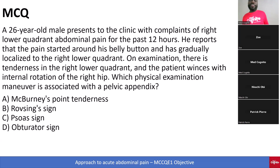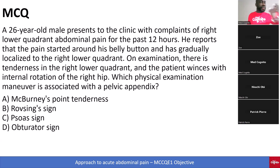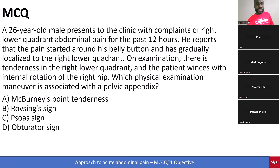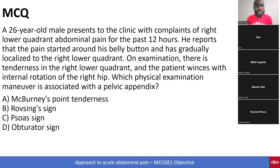A 26-year-old male presents to the clinic with complaint of right lower quadrant abdominal pain for the past 12 hours. He reports that the pain started around his belly button and has gradually localized to the right lower quadrant. On examination, there is tenderness in the right lower quadrant, and the patient winces with internal rotation of the right hip. Which physical examination maneuver is associated with a pelvic appendix? A, McBurney's point tenderness. B, Rovsing's sign. C, Psoas sign. D, obturator sign.